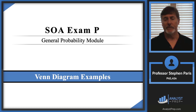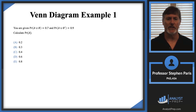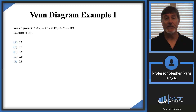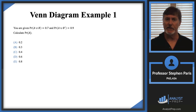In this video we're going to do some Venn diagram examples. These examples are coming straight from the sample questions for exam P. For the first one, we have a probability of A union B of 0.7, a probability of A union B prime of 0.9, and we're asked to calculate the probability of A.